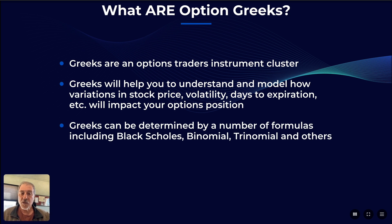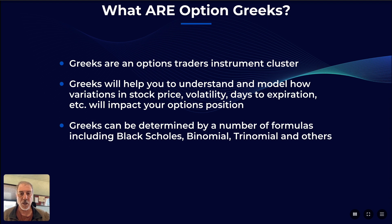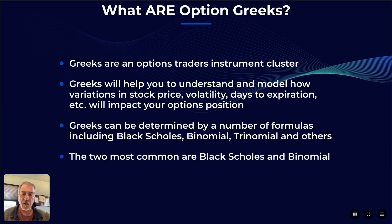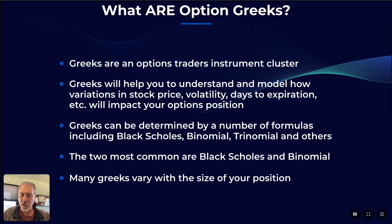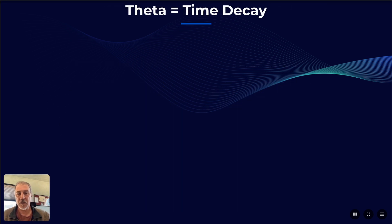Greeks can be determined by a number of formulas, including Black-Scholes, binomial, trinomial, and others. Most options platforms give traders the ability to select which one they want to use. Black-Scholes is probably the most common, with Black-Scholes and binomial being the two most common overall. It's also important to know that Greeks vary with the size of your position in most cases.